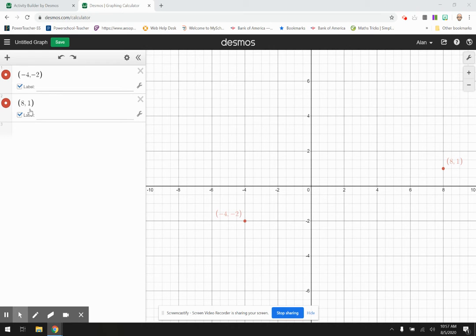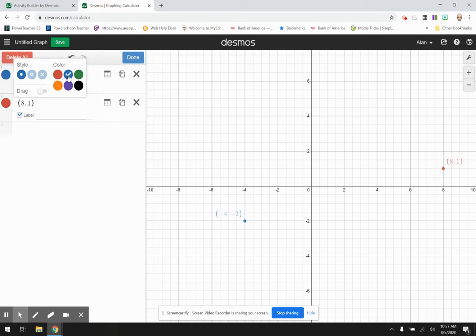So you would have the two points listed in your rows here. You can label or not label them. If you click these buttons right here, you can change colors. You can click the wheel and change a color. Maybe I want one blue and one red. I'll keep them both red for now.